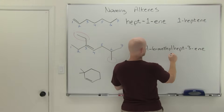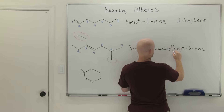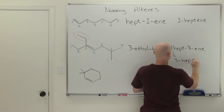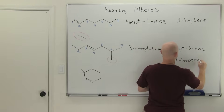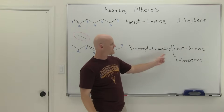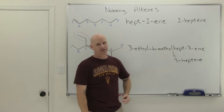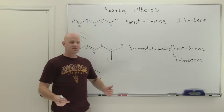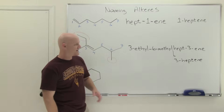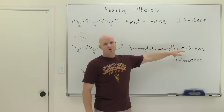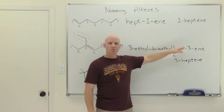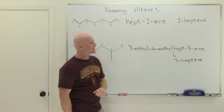We could also write this the other way as 3-ethyl-6-methyl-3-heptene at the end. Most professors will accept either one as an acceptable IUPAC name, but hept-3-ene in the middle is the more proper modern form, while 3-heptene is old school. Both should be acceptable.